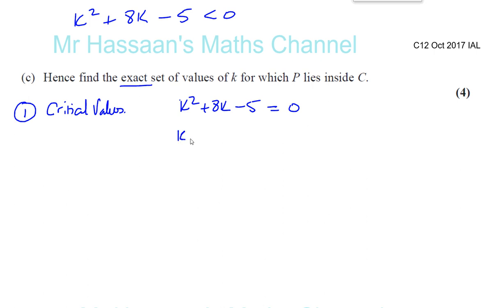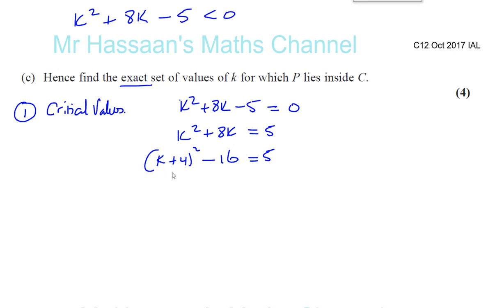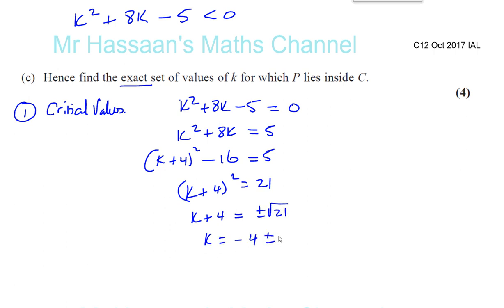Completing the square: K² + 8K = 5, so (K + 4)² − 16 = 5. Here I take half the coefficient of K (which is 4), square it, and subtract it. So (K + 4)² = 5 + 16 = 21. Therefore K + 4 = ±√21, giving K = −4 ± √21. Those are the critical values.